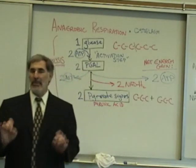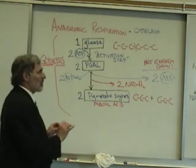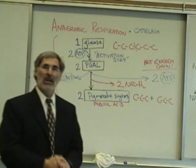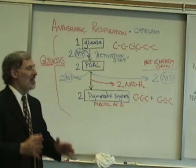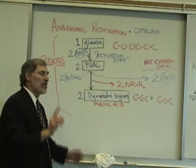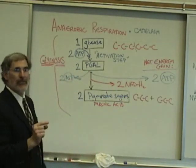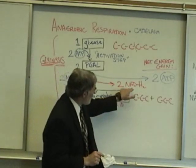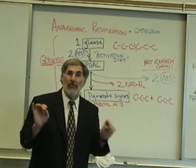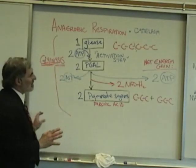What happens next depends upon whether there is oxygen available or there is not. If oxygen is available, we will move on to aerobic respiration, which occurs in the mitochondria of the cell. However, if oxygen is not available, this entire process of cellular respiration stops — but something has to happen with these hydrogen atoms that were removed from the sugar molecule by NAD, and the answer is what's called fermentation.